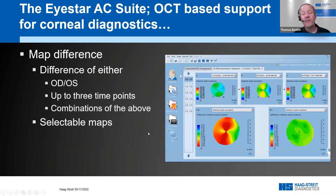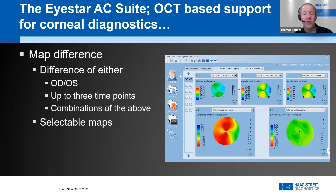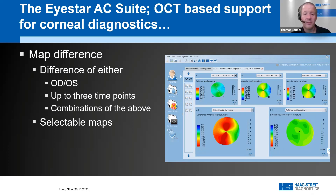You can also do the same comparison with just maps for a larger representation of the difference, and compare up to three different data sets — for example, three time points of the same patient. We see the difference map of A minus B and B minus C, selectable from the pull-down menu. This is an easy, intuitive tool to show progression in axial curvature or any other parameter available as a map.